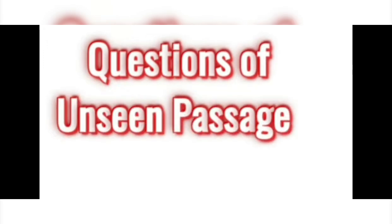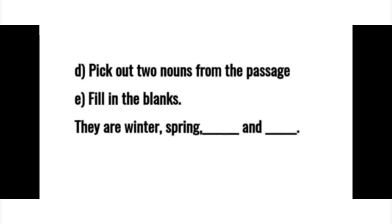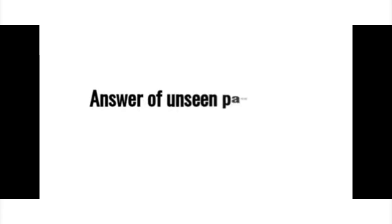Now questions of unseen passage. There are total five questions. First question: How many seasons are there in England? Second question: Which season comes after summer? Third question: When does winter begin? Next question: Pick out two nouns from the passage. And the last question: Fill in the blanks.